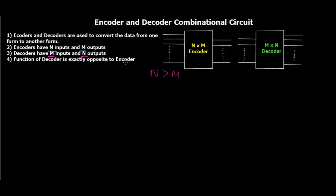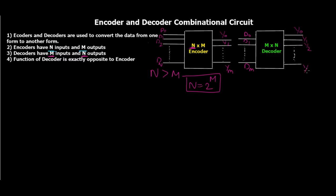The encoder encodes data while the decoder decodes that same data. An encoder takes n input lines — D0, D1, D2, up to Dn — and gives an output of m output lines: Y0, Y1, up to Ym. The relation between the two is n equals 2 raised to m. Similarly, a decoder takes m inputs — D0, D1, up to Dm — and the output is n lines: Y0, Y1, Y2, up to Yn, where n is always greater than m.